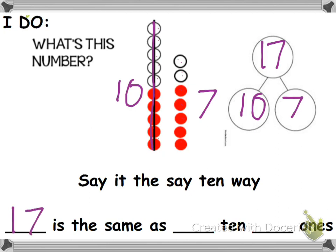You put 17 is the same as 1 ten—we have one group of 10 right here—so it's the same as 1 ten and 7 ones, seven left over there not in a group with a line through it.